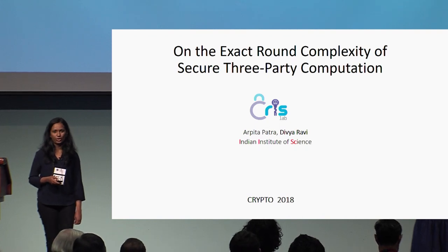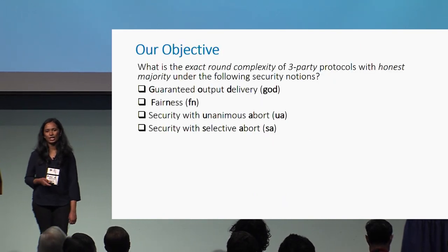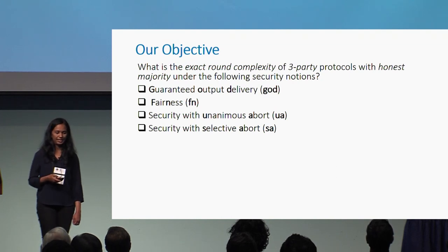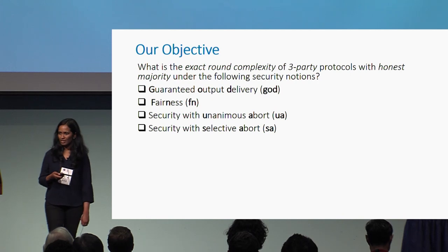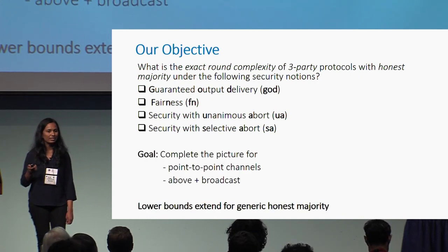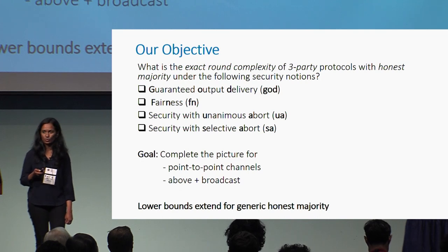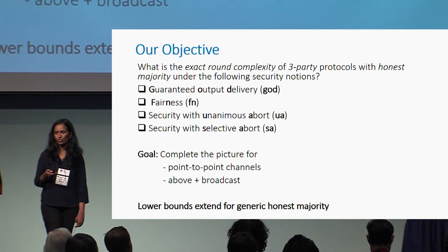This talk is about the exact round complexity of secure three-party computation, joint work with advisor Arpita Patra. We consider the specific setting of three parties with honest majority and investigate its exact round complexity over a range of security notions: guaranteed output delivery, fairness, security with unanimous abort, and security with selective abort. Some results were partially known; our goal was to fill in the gaps and complete the picture for two popular network settings — point-to-point private channels, and additionally a broadcast channel. We complete this picture by means of two lower bounds and three upper bounds. While our upper bounds are specific to three parties, our lower bounds are generic and extend to the honest majority setting.